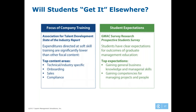Let's look at students' expectations. Even at the MBA level, students still have clear expectations for the outcomes of their graduate management education — they expect to gain general business knowledge, managerial skills, and competencies for managing projects and people. So even at the higher education level there's still something of concern. If we could start to develop these skills earlier, towards the high school or CTE setting, we can give them that competitive advantage.